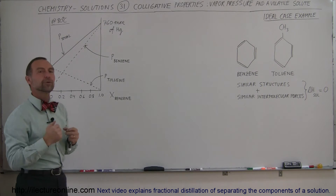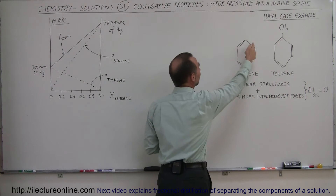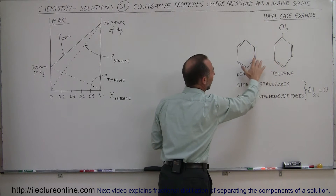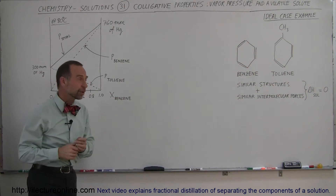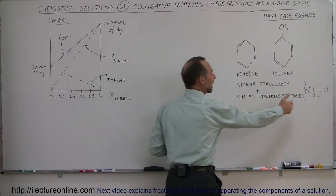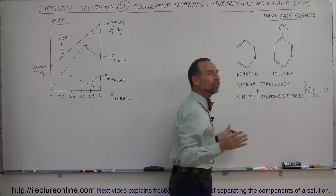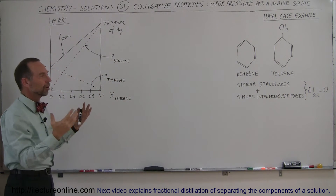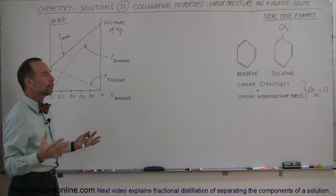The intermolecular forces are very similar. You can see the typical benzene ring with six hydrogens around it. With toluene, we have one extension — the CH3 group — so they're very similar. When you add the two together, the delta H, the enthalpy of solution, is equal to zero. In other words, there's no real energy advantage to having the two together versus having them separate.